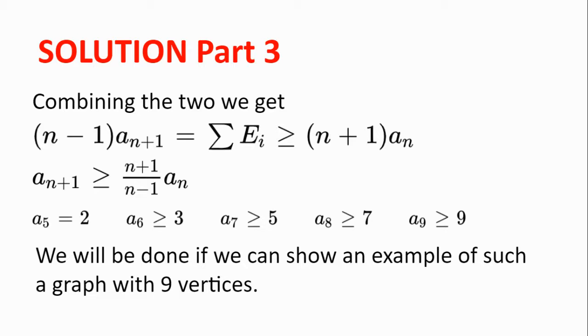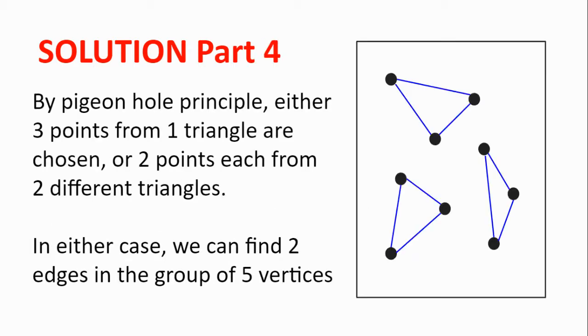We will be done if we can show an example of such a graph with 9 vertices. We can split those 9 vertices into 3 groups of 3, and in each group of 3, we create a triangle with the edges as shown in the diagram. Now by pigeonhole principle, either 3 points from 1 triangle are chosen, or we can find 2 triangles from which 2 points each are chosen.